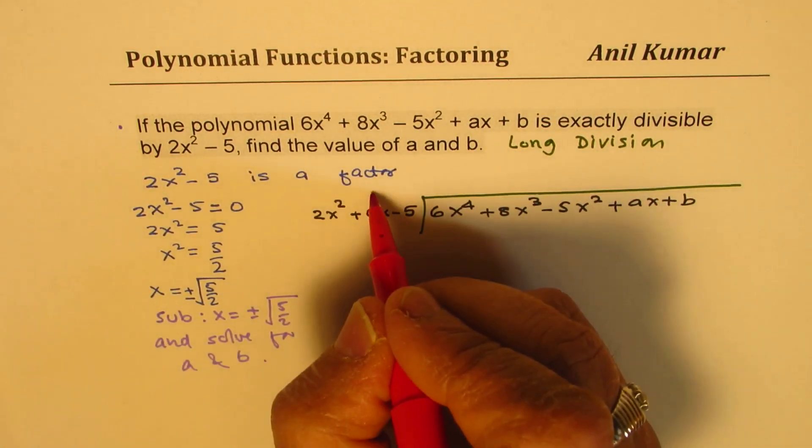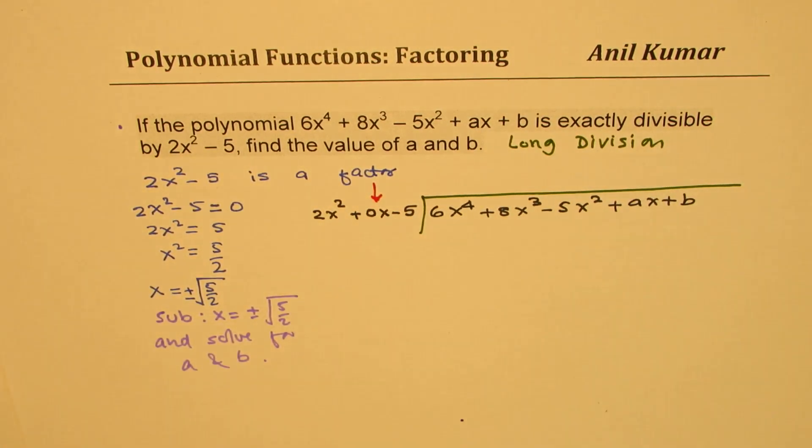You will notice that x term is missing. So we will write a placeholder 0x here to divide. Now this placeholder is very important. We have introduced 0x just as a placeholder. It doesn't really change the divisor. Now let's divide.